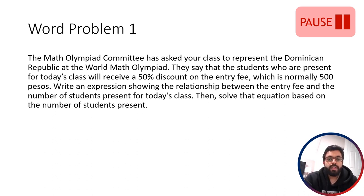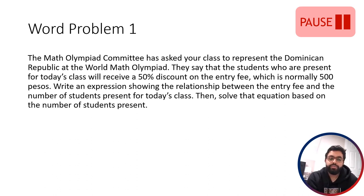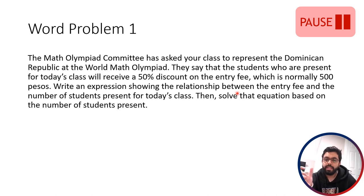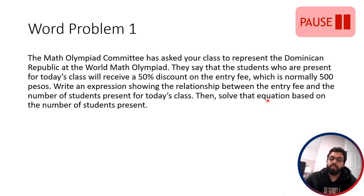Next: the Math Olympiad Committee has asked your class to represent the Dominican Republic at the World Math Olympiad. Students present for today's class will receive a 50% discount on the entry fee, which is normally 500 pesos. Write an expression showing the relationship between the entry fee and the number of students present for today's class, and then solve that equation based on how many students are in class today.